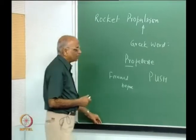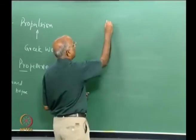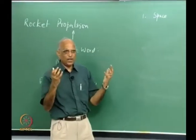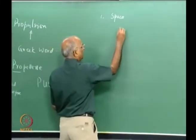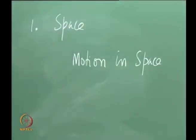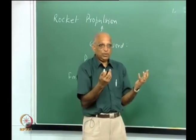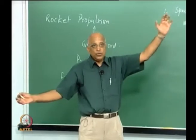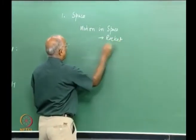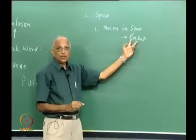The first class starting today will look at what we mean by the word space, what constitutes space, and in what way motion in space is different from motion on the ground. Once we know how motion takes place in space, we will find out the exact requirements a rocket must meet. The first chapter deals with motion in space and converting that to the requirements of a rocket.